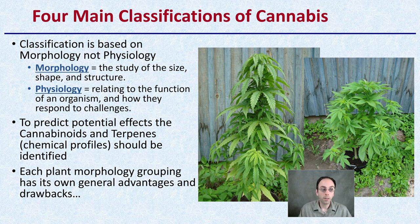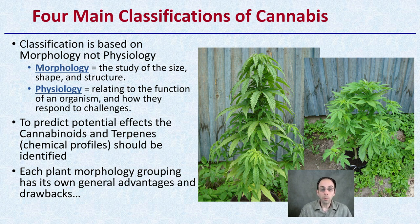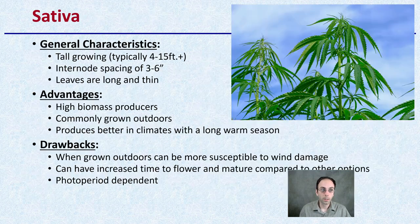To predict potential effects, the cannabinoids and terpenes — which are the chemical profiles — should be identified. You shouldn't be looking at just how the plant looks; you should be more concerned with the chemical profiles. Each plant morphology grouping has its own general advantages but also has a set of drawbacks.